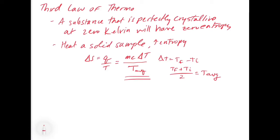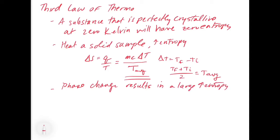That equation allows us to look at delta S for heating a solid sample. For phase changes, we already know from the second law that a phase change results in a large increase in entropy. We use delta S equals q over T, which equals delta H of the process over T — where that process could be vaporization, fusion, or whatever is occurring. Starting from zero entropy at zero kelvin, we can use these two equations to figure out what entropy any system will have after heating and phase changes.